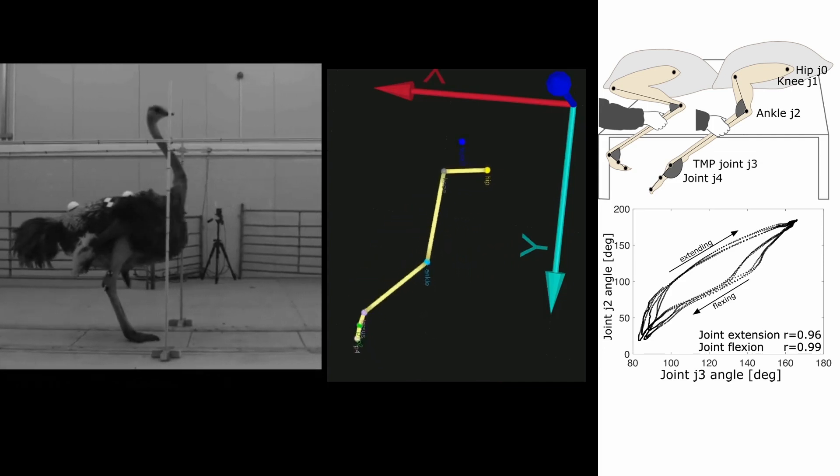The central nervous system was inactive in this experiment. Instead, the observed coupling arose only from passively connected tissue and was therefore mechanical.